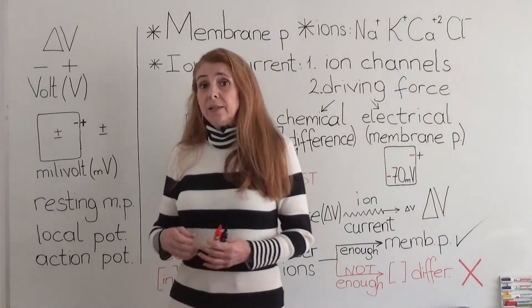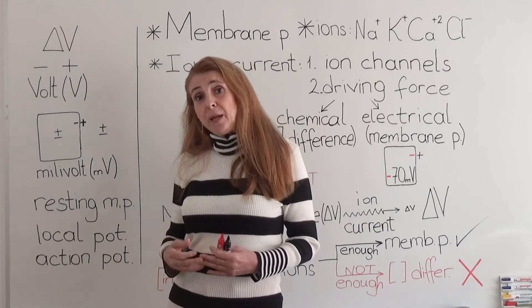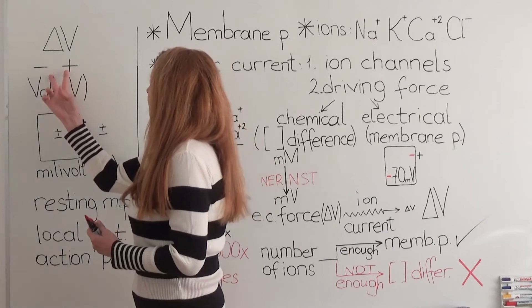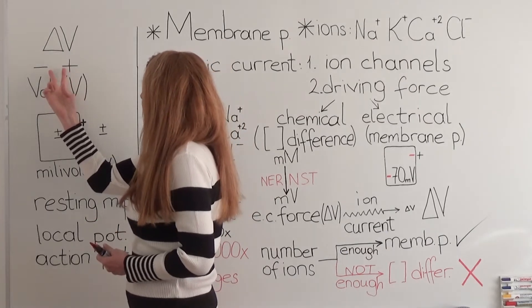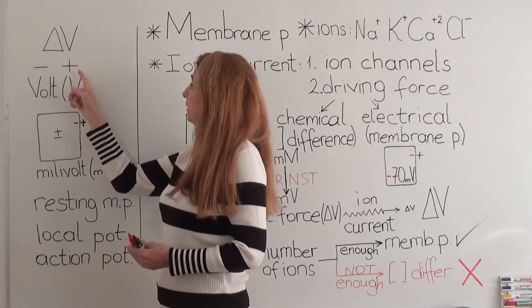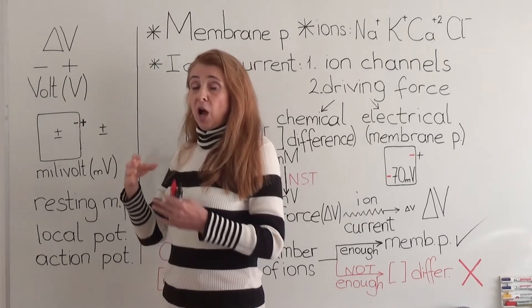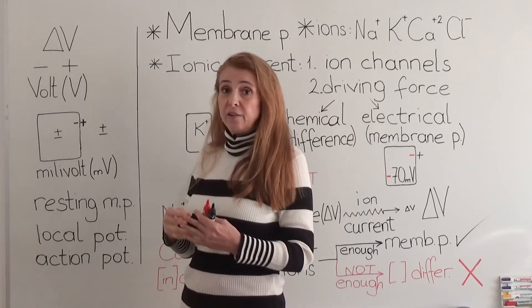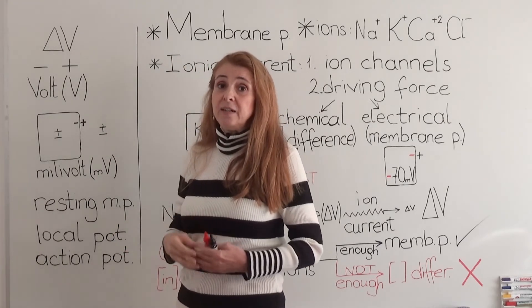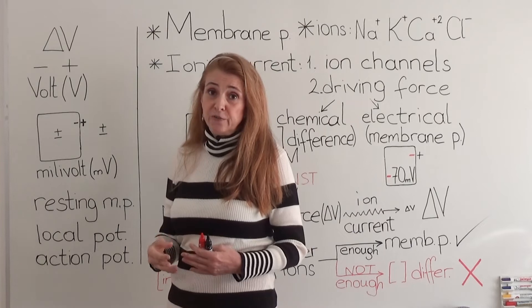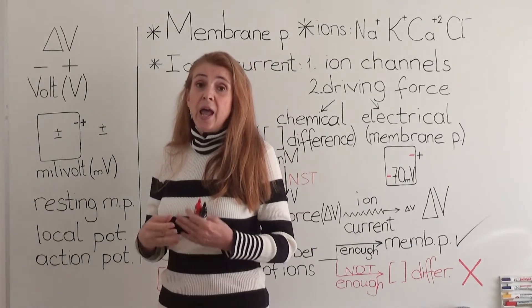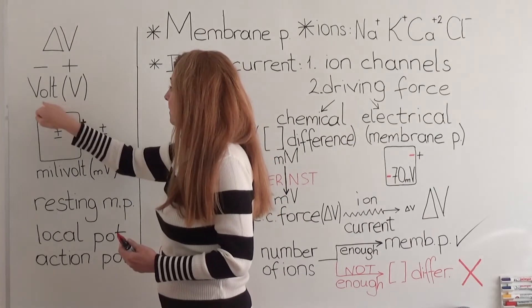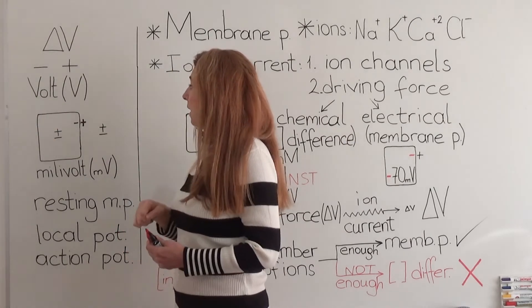Let us start by explaining what an electrical potential difference is. Consider two areas relatively close to each other. If positive charges are higher in number in one area and negative charges in the other, then we say there is an electrical potential difference between these two areas. This is designated by delta V and the unit is the volt, designated by V.